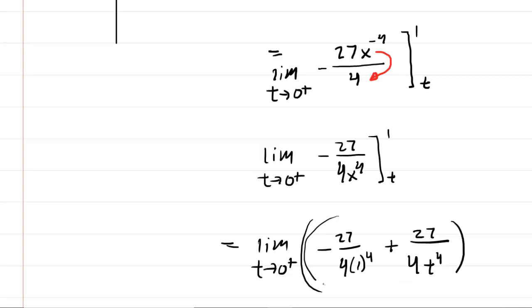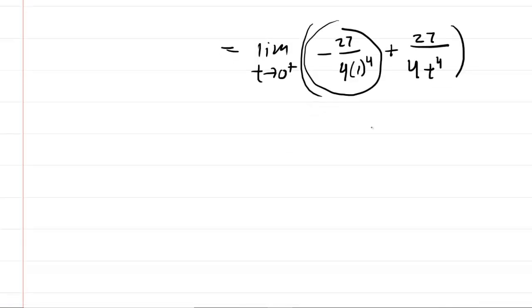Now we know that this value here is a finite value, we don't even really need to compute it if we don't want to. What matters more so is what's going on over here. Because remember, t is approaching zero.